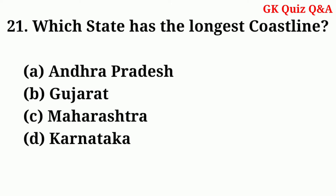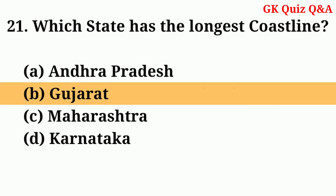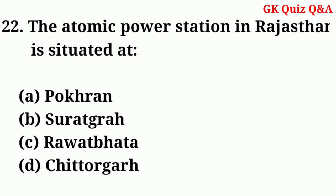Which state has the longest coastline? Answer: Gujarat. The atomic power station in Rajasthan is situated at? Answer: Rawat Bhata.